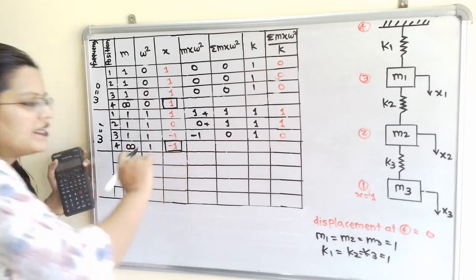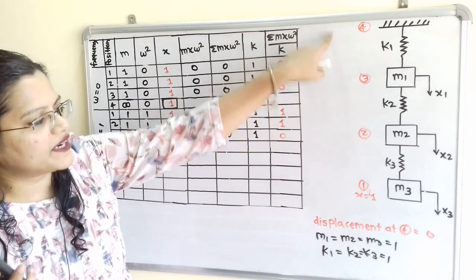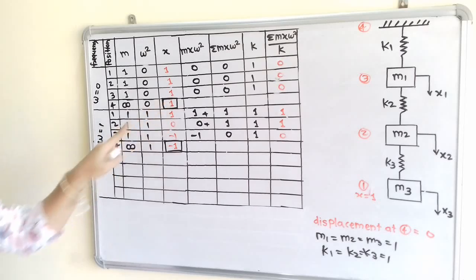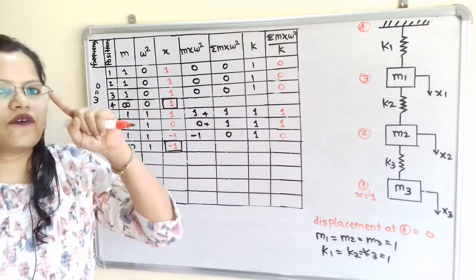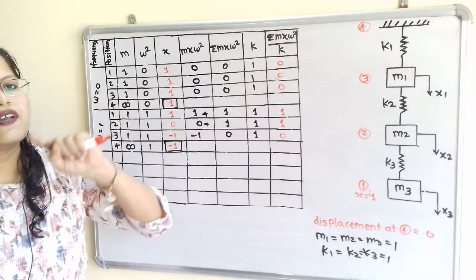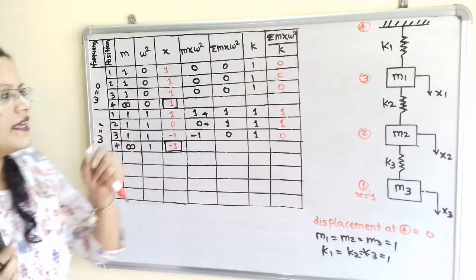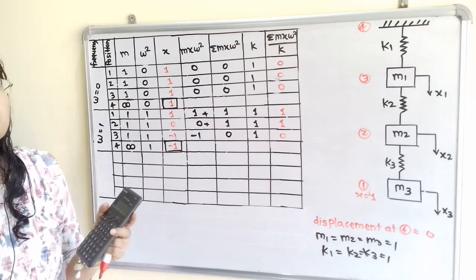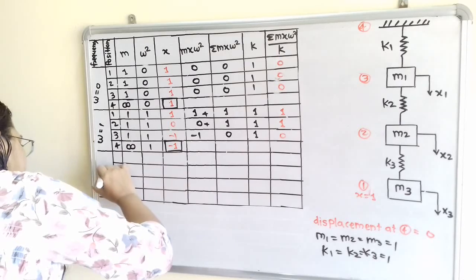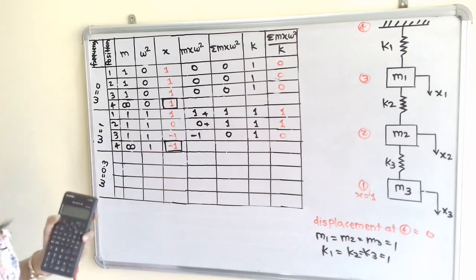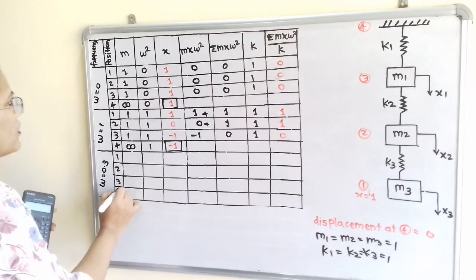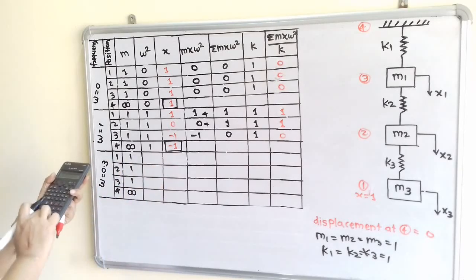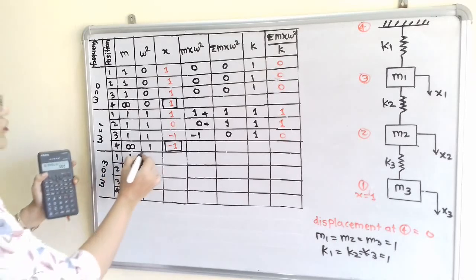We need to find the first non-zero natural frequency. At omega = 0, the displacement at position 4 has a plus sign, and at omega = 1, it has a minus sign. Since the natural frequency always lies between the plus and minus values, we can take any omega between 0 and 1. For a good graph, we will assume omega = 0.3, so omega² = 0.09.